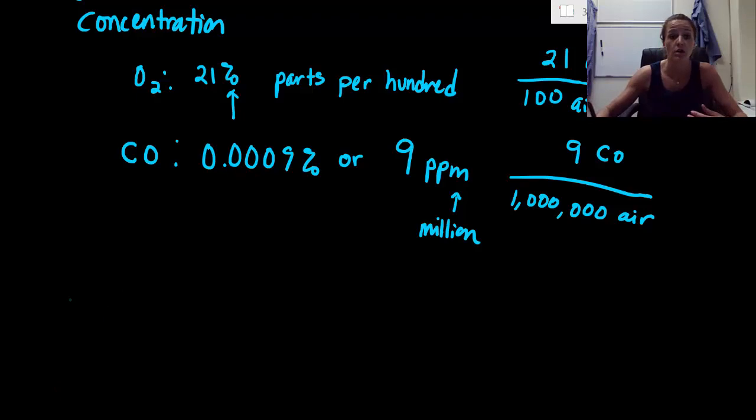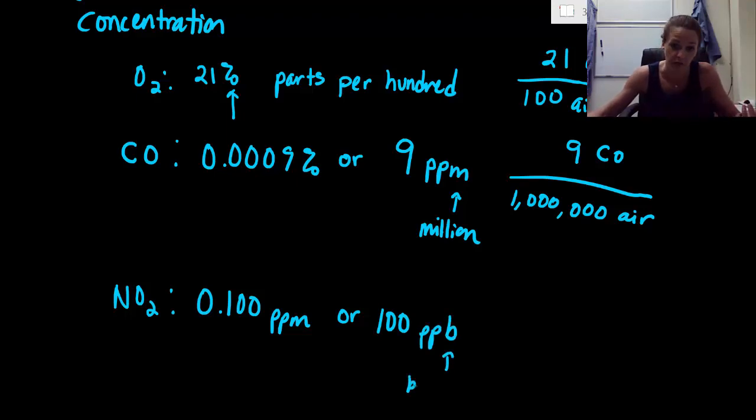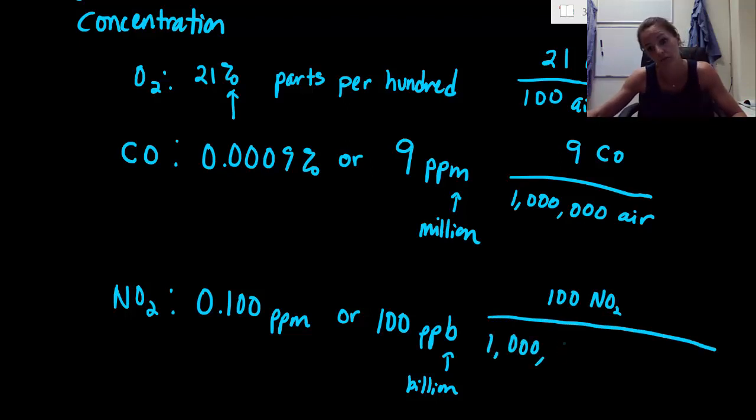Now if we had something even smaller, like NO2 or nitrogen dioxide, something very common for this one would be 0.100 ppm. 0.1 ppm, that's okay, we can kind of quickly say that. But a lot of times people would actually prefer to say 100 ppb, or parts per billion. So if you were to write this out in terms of a fraction, you would say we have 100 pieces of NO2 per every billion pieces of air.